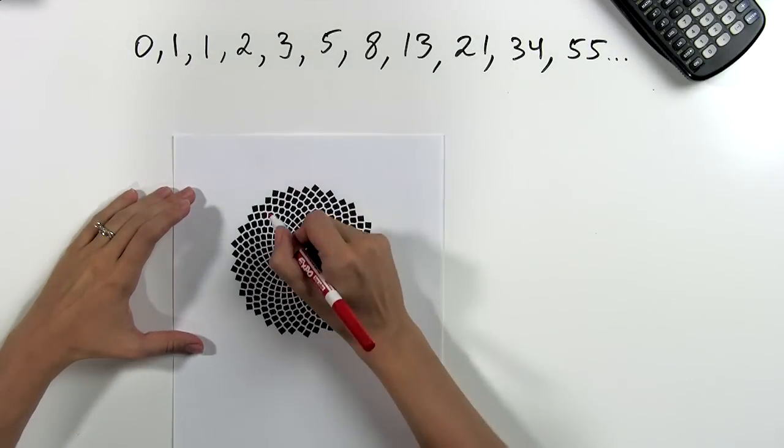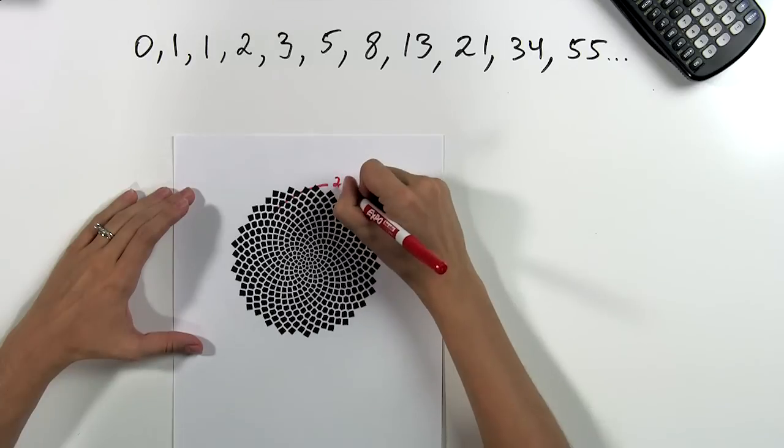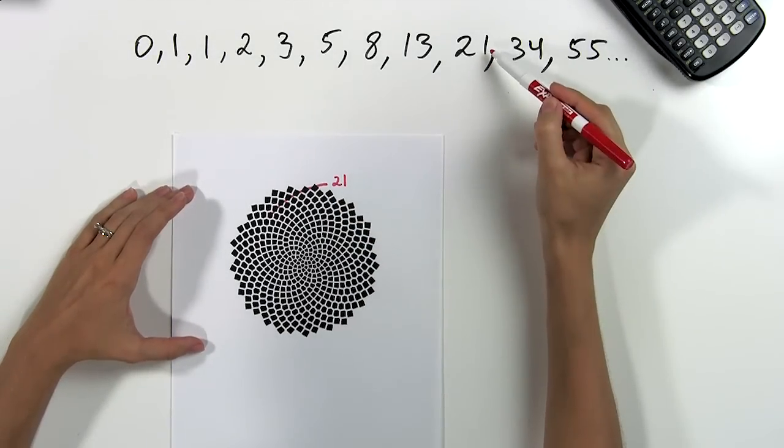For example, if we count the number of spirals going in this direction, we will find that there are 21 of them when we add them up, and 21 is one of our numbers.